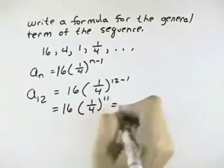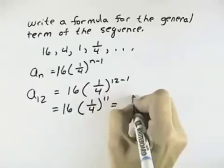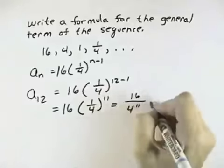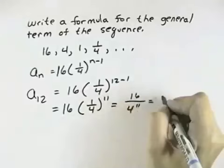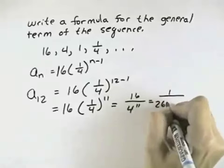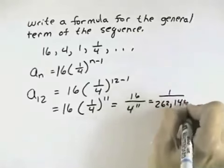So I need to evaluate out the 11th power. And so I have 16 over 4 to the 11th is another way to look at 1/4 to the 11th. And after I cancel the 16, that will leave me 1 over 262,144.